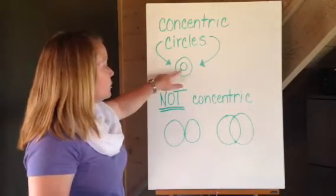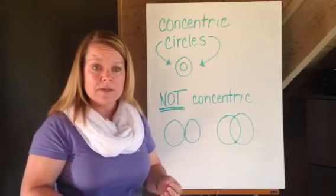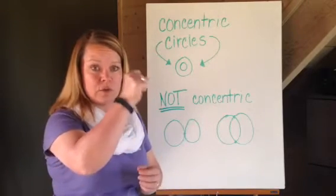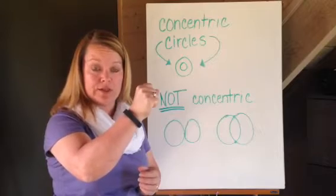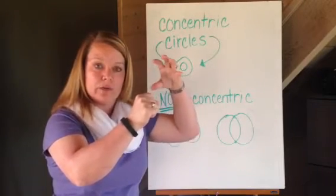So concentric would look something like this. Another example, if you think about a dart board, how it has the circles, the smallest one being the most points in the very center and then the circles that come out and get bigger and bigger and bigger and bigger.